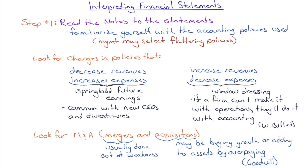Look for changes in policies that combined decrease revenues and increase expenses — this is to springboard future earnings. It's typically done when a new CEO takes over: they blame the previous management, write everything off, take large charges, show a big loss in the current year, and eliminate legacy costs. Going forward, they have a clean slate with no legacy costs — their numbers look great, but it's at shareholders' expense in that transition year.